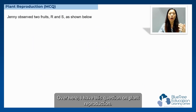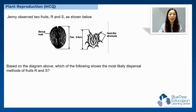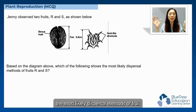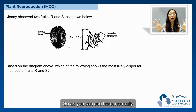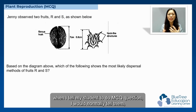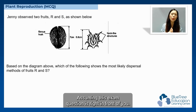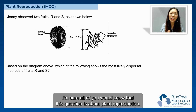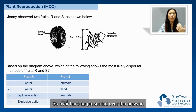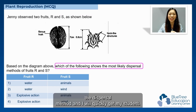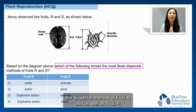I have a question on plant reproduction here — a MCQ question. It says that Jenny observed two fruits R and S as shown below, and asks which of the following shows the most likely dispersal methods of fruit R and fruit S. Now normally when I tell my students to do a MCQ question, I tell them don't jump into the question straight away. The very first thing is to identify the topic, and the second step is to highlight the key information — in this case, the dispersal method of fruits R and S.